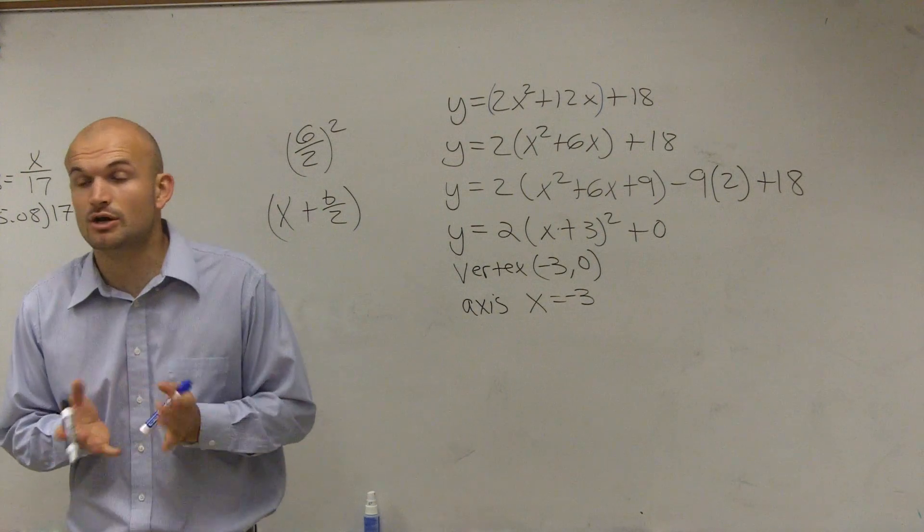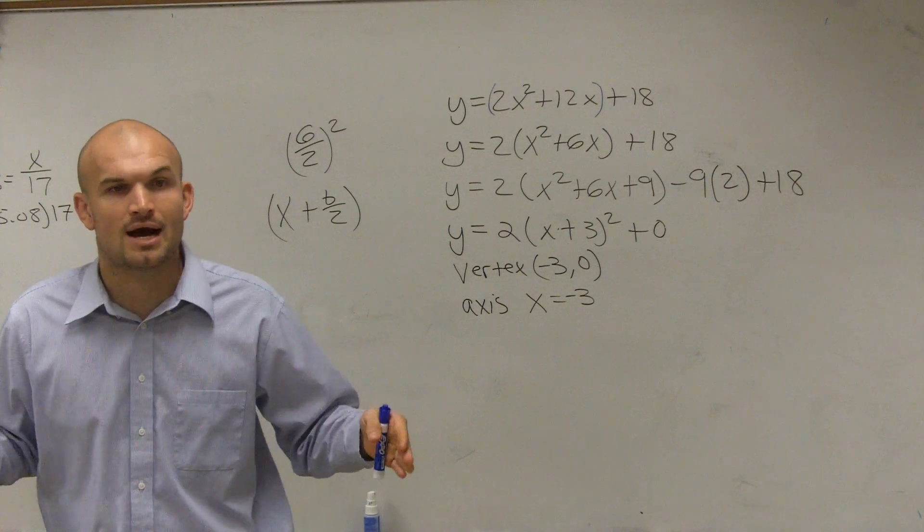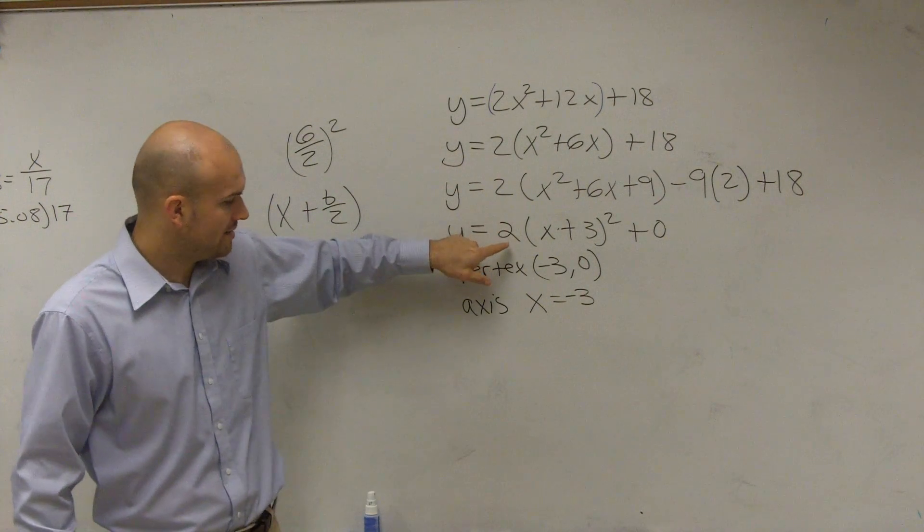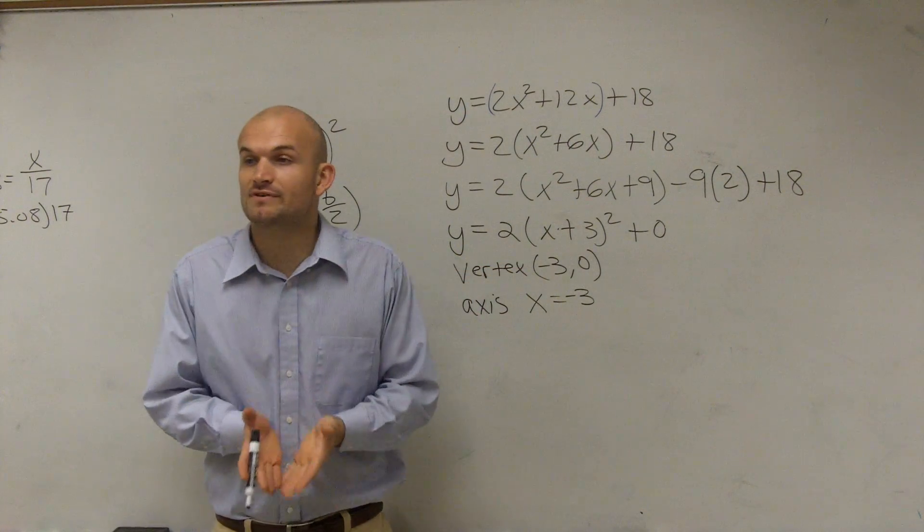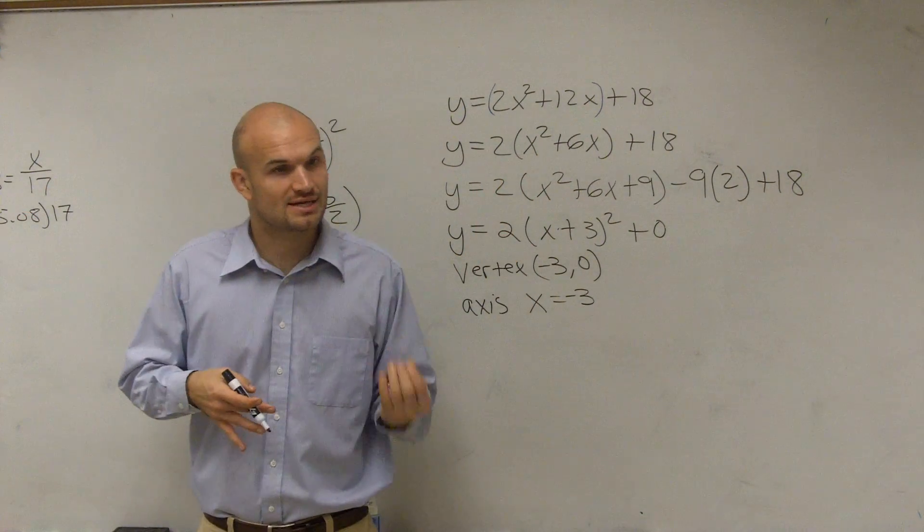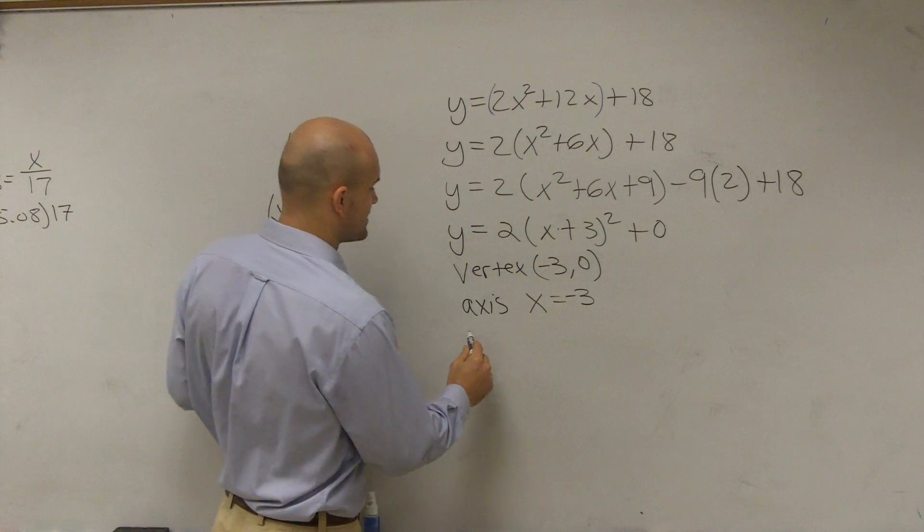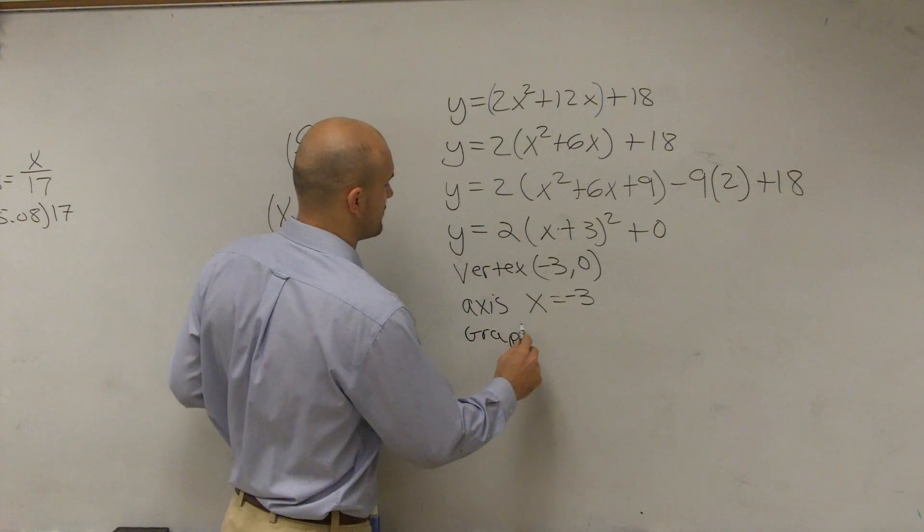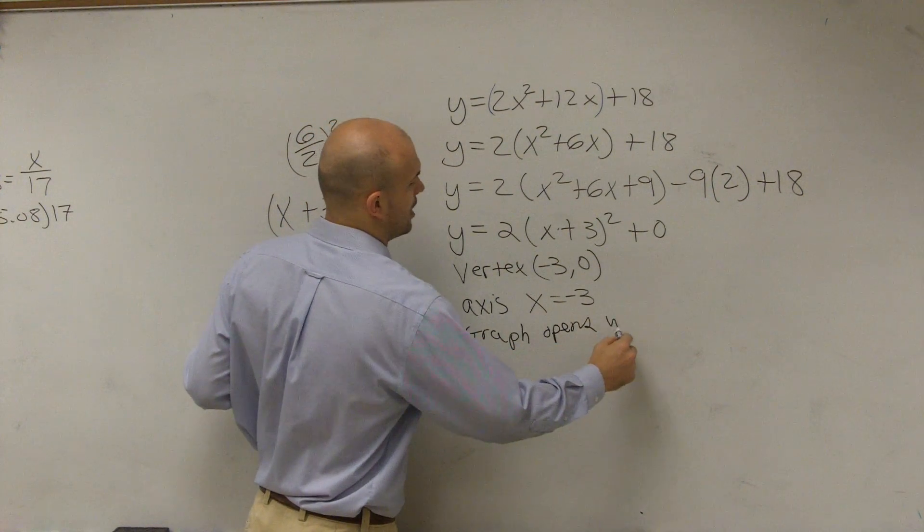Then, the last thing we need to do is determine, does our graph open up, or does it open down? Well, we're going to look at our a. And since our a is positive, we know that our graph is going to open up, and our vertex is going to be a minimum. So we can just write in there, the graph opens up.